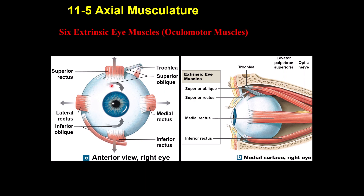Then there are two oblique muscles. One is called superior oblique, which moves the eye inward and downward — that's called intorsion. The other is the inferior oblique, which moves the eye upward and outward — that's called extorsion. The inferior oblique is around this area; it's a little difficult to see from this view.